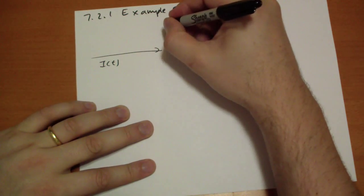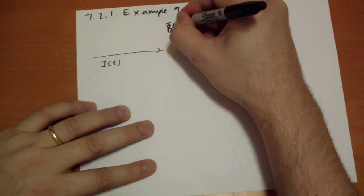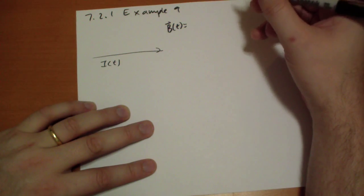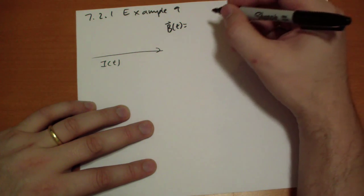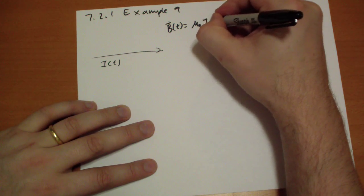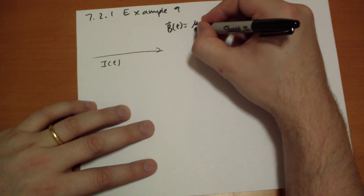The B field is going to vary with time, and that's going to be equal to mu naught I all over 2 pi r.